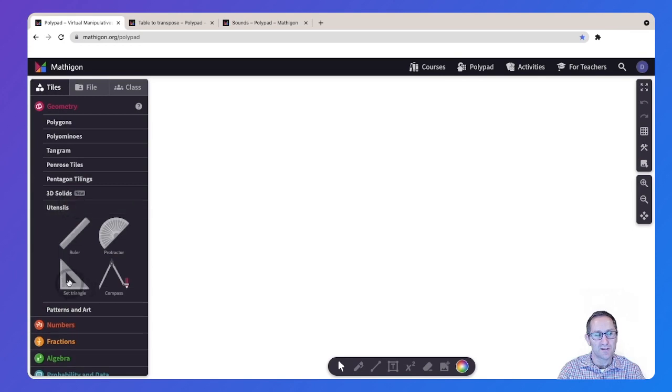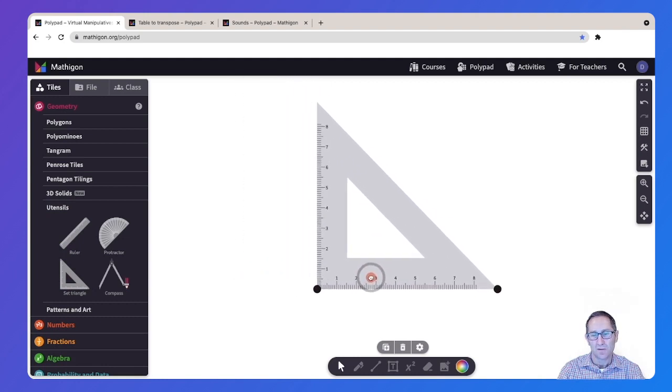Those are under utensils here. I'll click on the set triangle to add it to the canvas. You can use these black circles to change the size of the set triangle. Once you have a size you like you can draw a triangle in a number of ways. I'll start with the pen tool and I'll click and drag to draw a line along each side of the set triangle to make my right triangle. So there's one way to make a triangle.